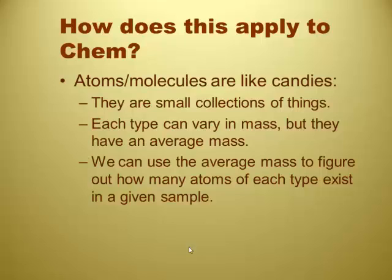So how do we apply this to chemistry? Atoms and molecules are just like those candies, they're small collections of things. We can know the mass of each type because they each have an average mass. We can find the average mass on the periodic table.